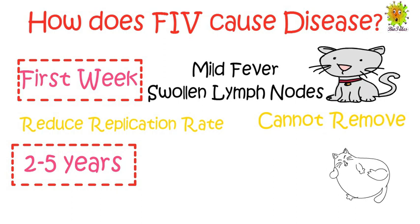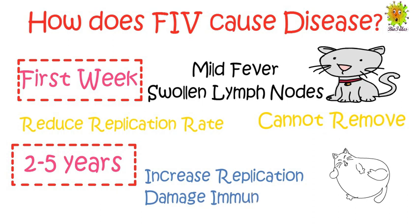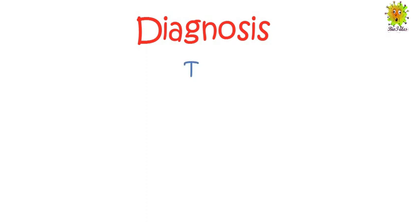This increased rate of viral replication damages the immune system. Now we see how FIV can be diagnosed. FIV is normally diagnosed by testing for antibodies in the cat's blood. Since the cat is unable to eliminate the virus from the body, the presence of antibodies means that virus must be present in the body.